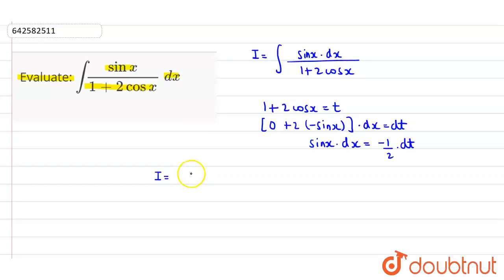So we will get the value of i as integration. Now we can see sin x dx, its value is minus 1 by 2 dt. So put the value minus 1 by 2 dt, and what is the value of 1 plus 2 cos x? It is t only.